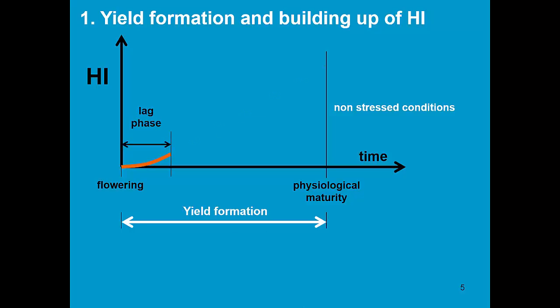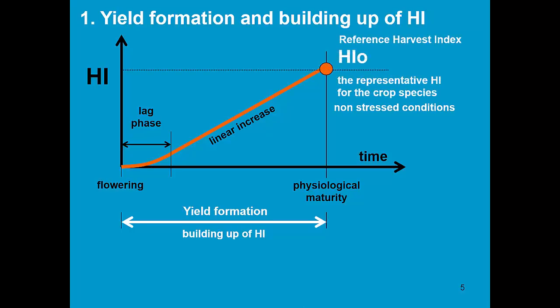It is zero at flowering, and then after a small lag phase, it linearly increases till physiological maturity. At physiological maturity, the crop reaches the reference harvest index, which is the representative harvest index from the crop species under non-stressed conditions.